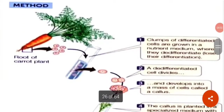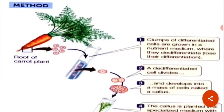If we look at the method, here we have a carrot plant — its root. We have isolated the cells. Clumps of differentiated cells are grown in the nutrient medium where they are de-differentiated, meaning they have lost their differentiation.